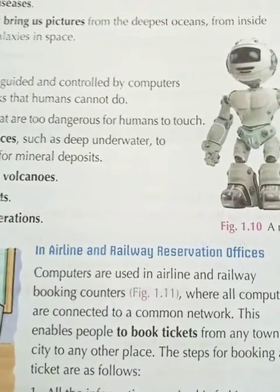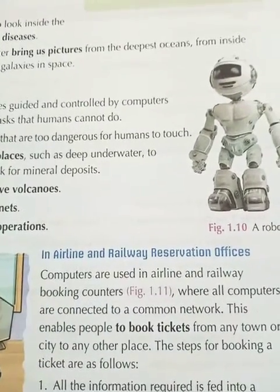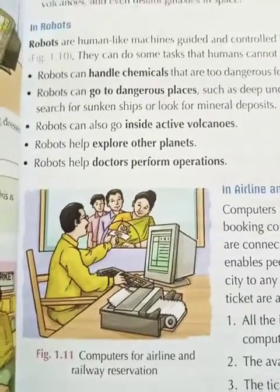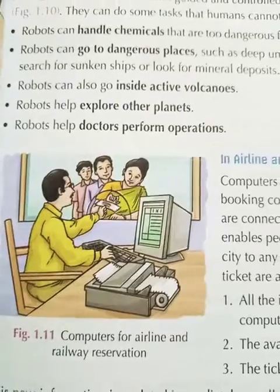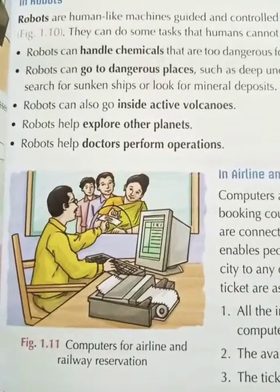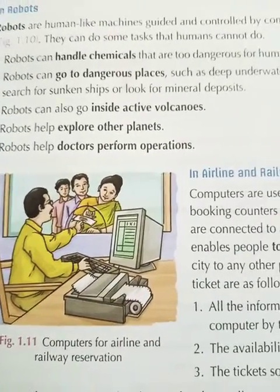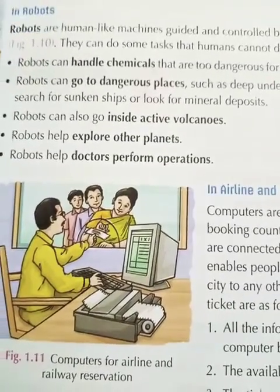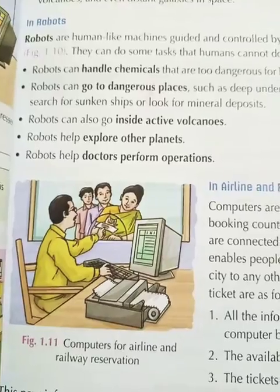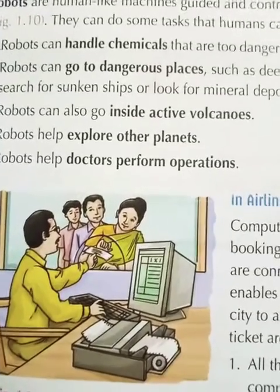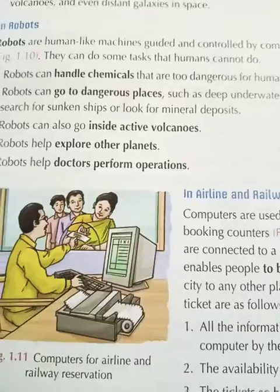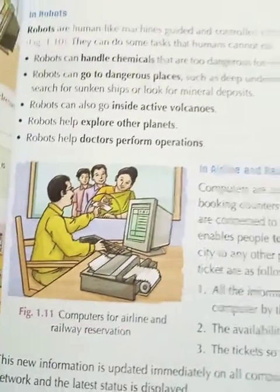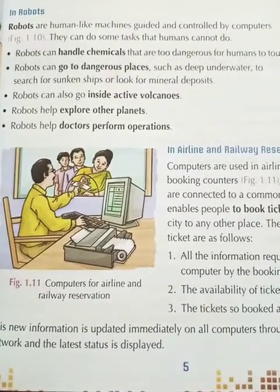The next heading is: in airline and railway reservation offices. Passengers can reserve airline and railway tickets using computers. Here is a picture showing computers used for airline and railway reservation. You don't need to stand in a line — from home you can open your reservation, choose your date, flight number, and if travelling by train, your seat number. Even your ticket can be booked this way. These things are very common now.